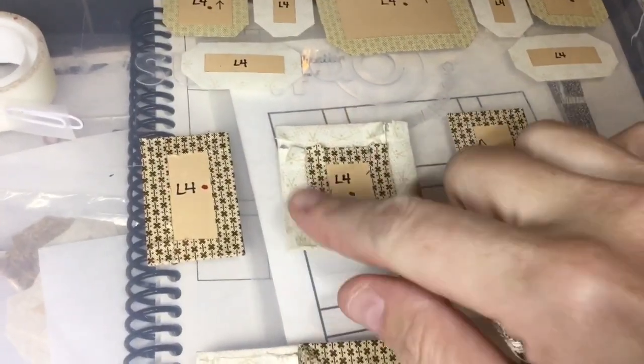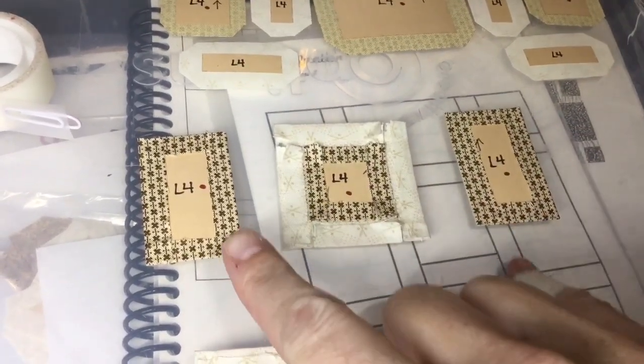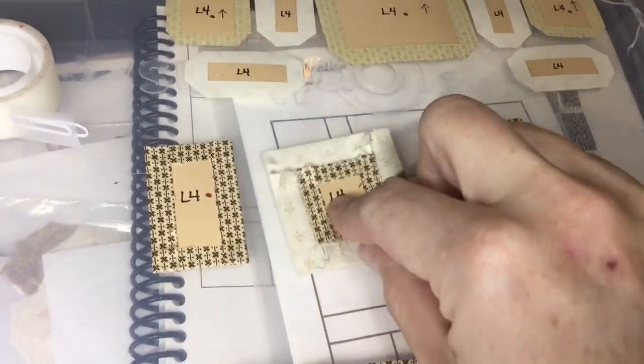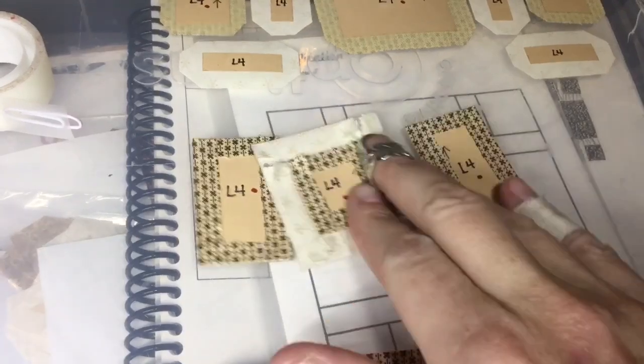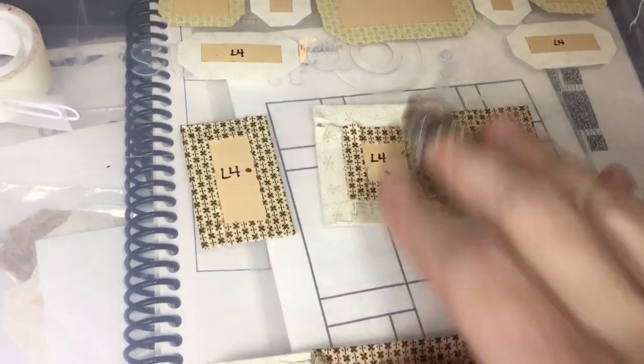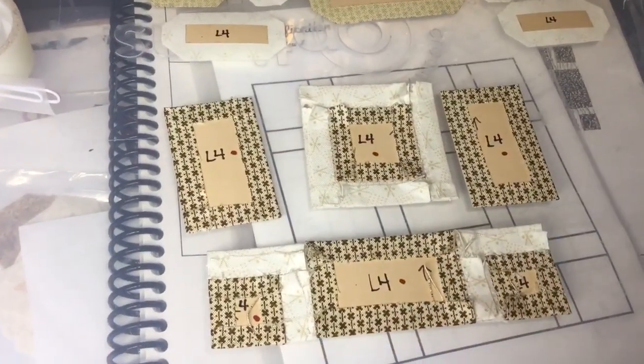Now that my center section is complete and I have my side rectangles basted, I will attach them to my center section and form the middle row, and then attach it to my bottom row.